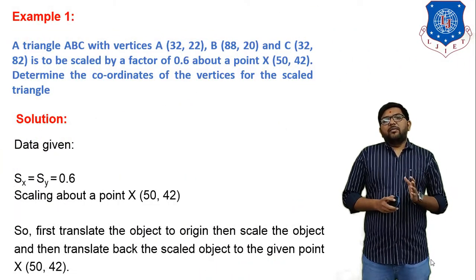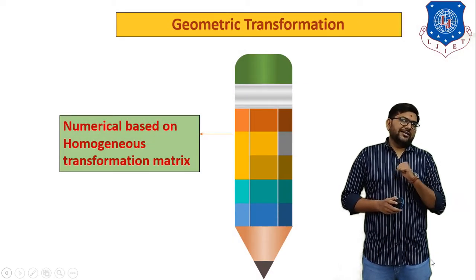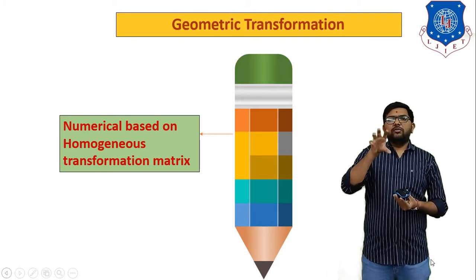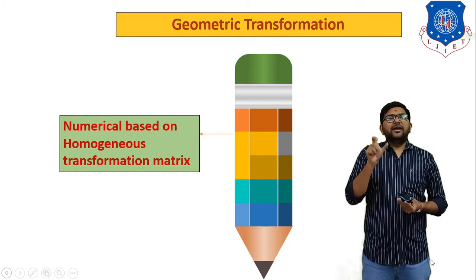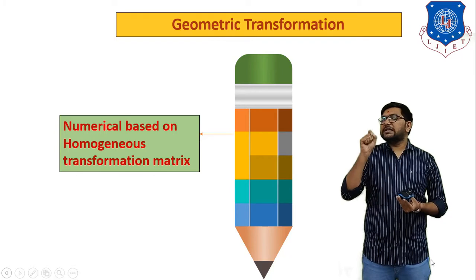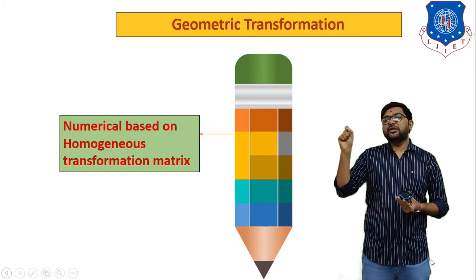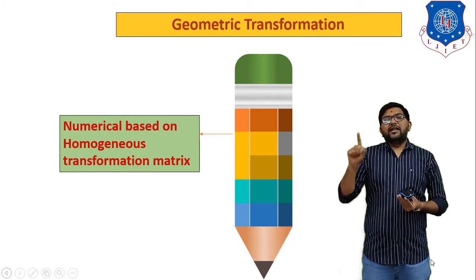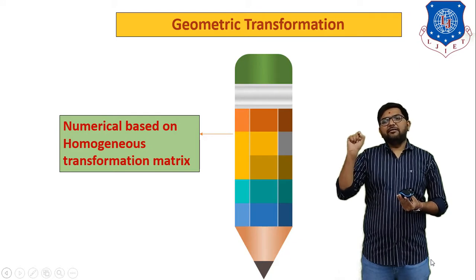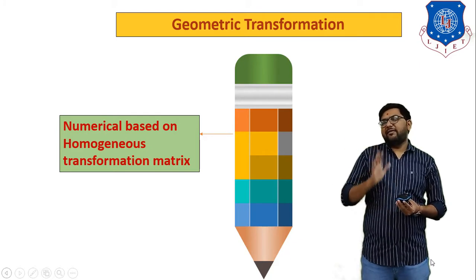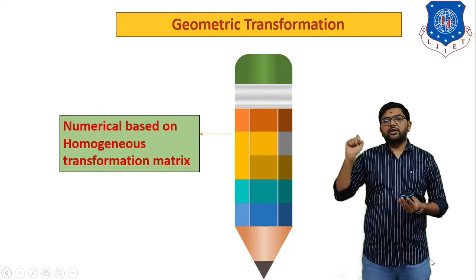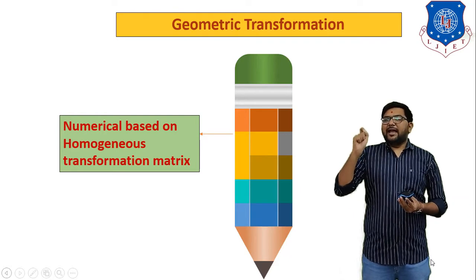Before that, you have to remember all the equations of the homogeneous transformation matrix. The first equation is for translation — translation means moving any object from one place to another. We derive a 3×3 matrix: [1 0 0 / 0 1 0 / TX TY 1], where TX indicates translation in the X axis and TY indicates translation in the Y axis. For scaling, the equation is [SX 0 0 / 0 SY 0 / 0 0 1], where SX indicates scaling in the X axis and SY indicates scaling in the Y axis.